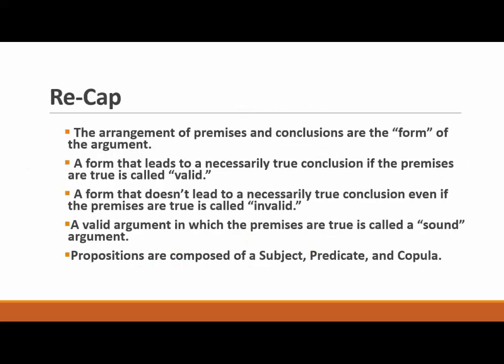The arrangement of premises and conclusions are the form of the argument. A form that leads to a necessarily true conclusion if the premises are true is called a valid argument. A valid argument in which the premises are true is called a sound argument. And lastly, propositions are composed of a subject, predicate, and copula.